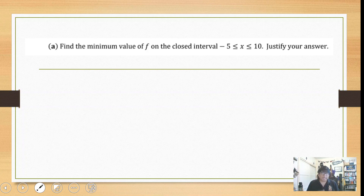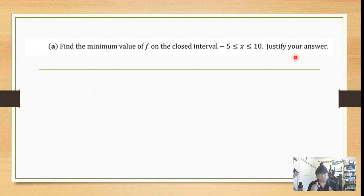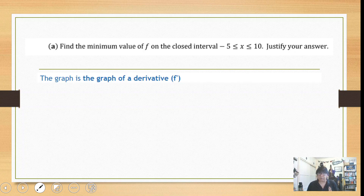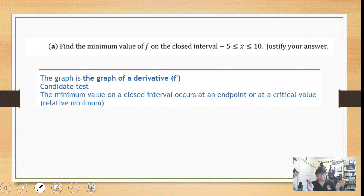Part A: we're asked to find the minimum value of f on the closed interval from negative 5 to 10. Justify your answer — remember, justification can be done in either mathematical equations or a written explanation. The first thing to realize is that you're looking at the graph of a derivative, f prime. So we can use all the knowledge from graph-of-derivative problems. We're looking for a minimum, so we'll use the candidate test: the minimum has to occur at an endpoint or at a critical number, and that critical number should be a relative minimum.